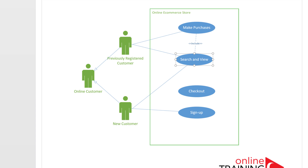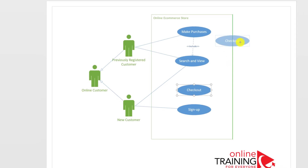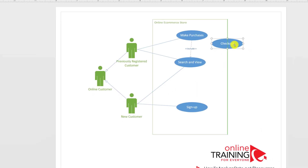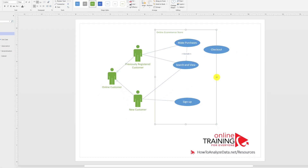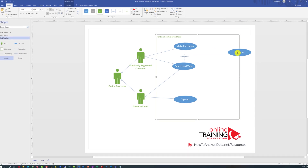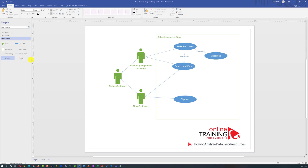Let's establish the same relationship between Make Purchases and Checkout. To avoid crossing lines, I'll bring the Checkout use case closer to Make Purchases and expand the subsystem shape. Now we can add the relationship between the Make Purchases use case and the Checkout use case.